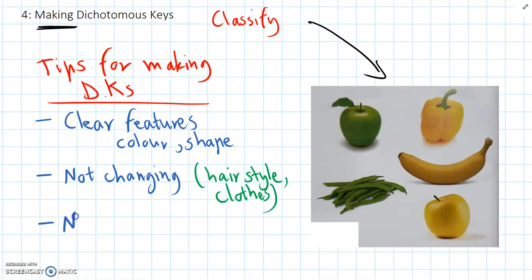Lastly, the final tip is no opinions. So features that we choose need to be really clear. We don't want to use things like tall or short. Because these words are a bit ambiguous. We don't know exactly what they mean.